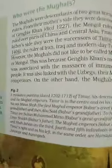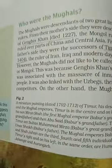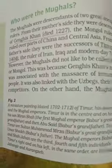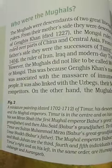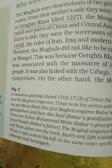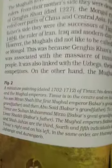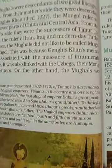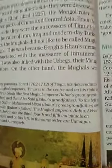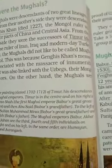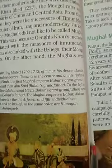They had come from two different sides — one from the mother's side and one from the father's side. From the mother's side came Genghis Khan, who died in 1227. From the father's side came Timur, who died in 1404.